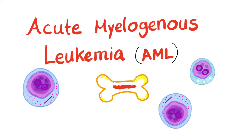Here are your myeloid blasts: the myeloblast and the monoblast. If the myeloblast were to mature — which won't happen in AML — it would produce neutrophils, eosinophils, and basophils. If the monoblast were to mature, it would produce monocytes.